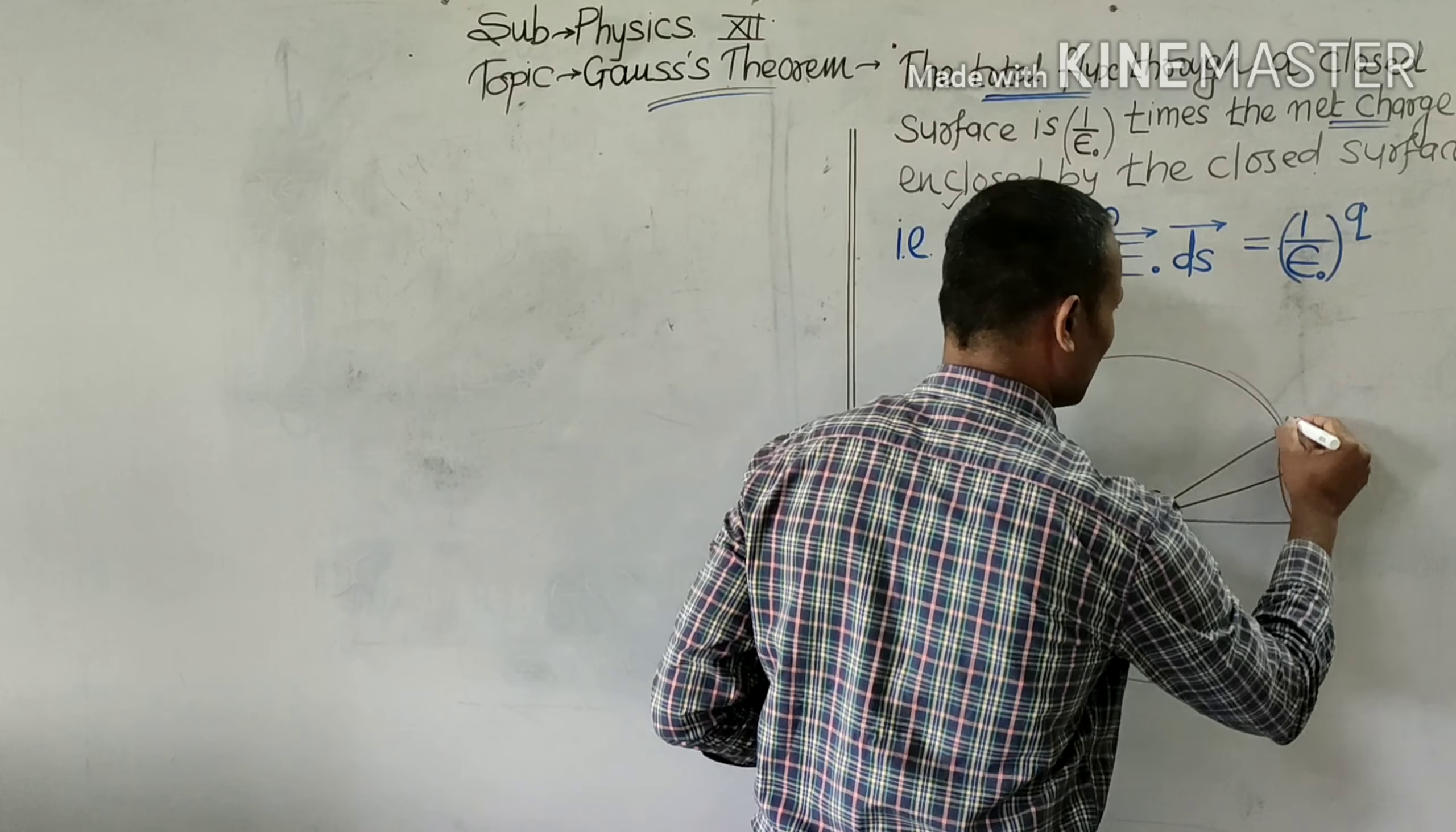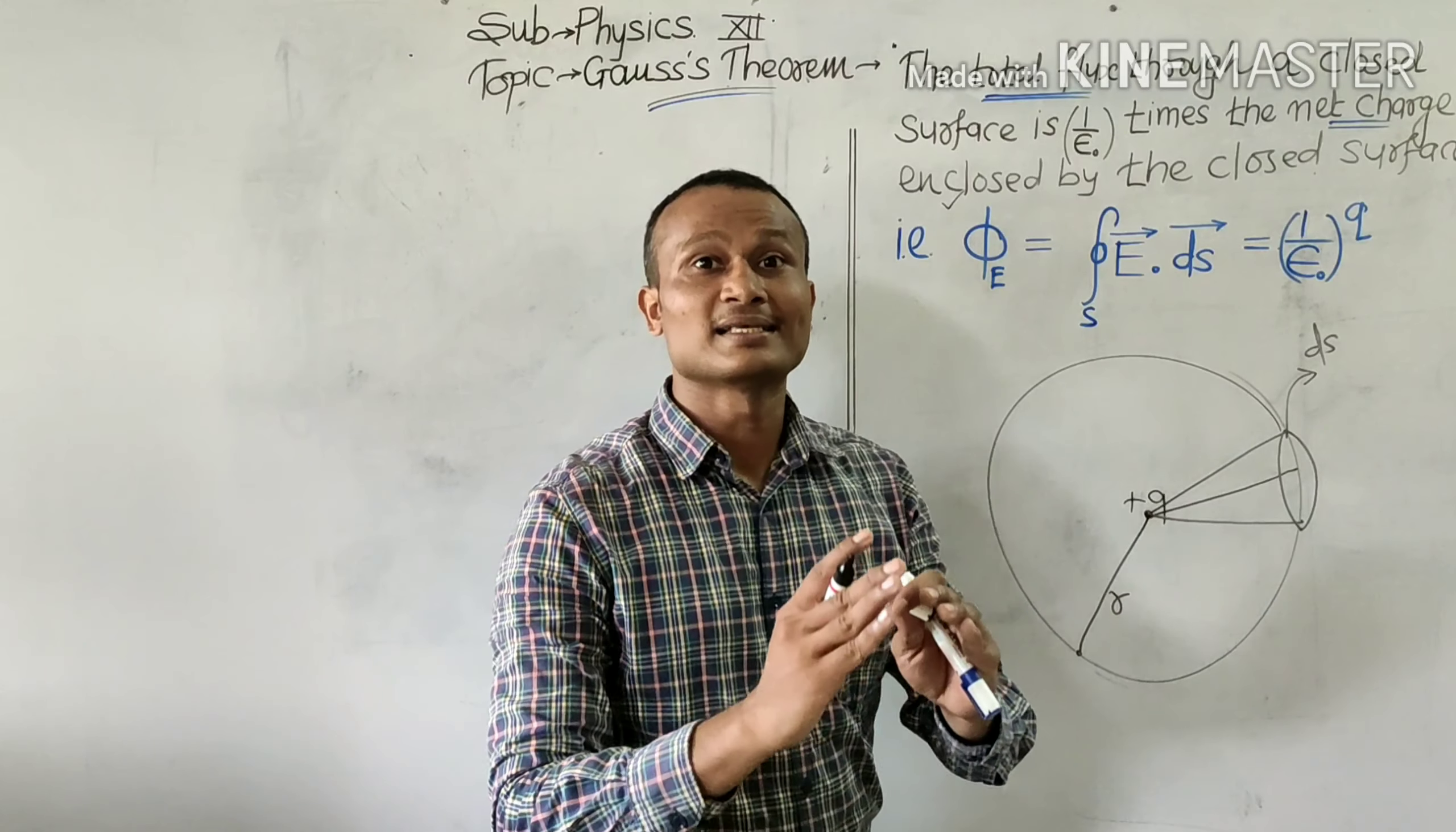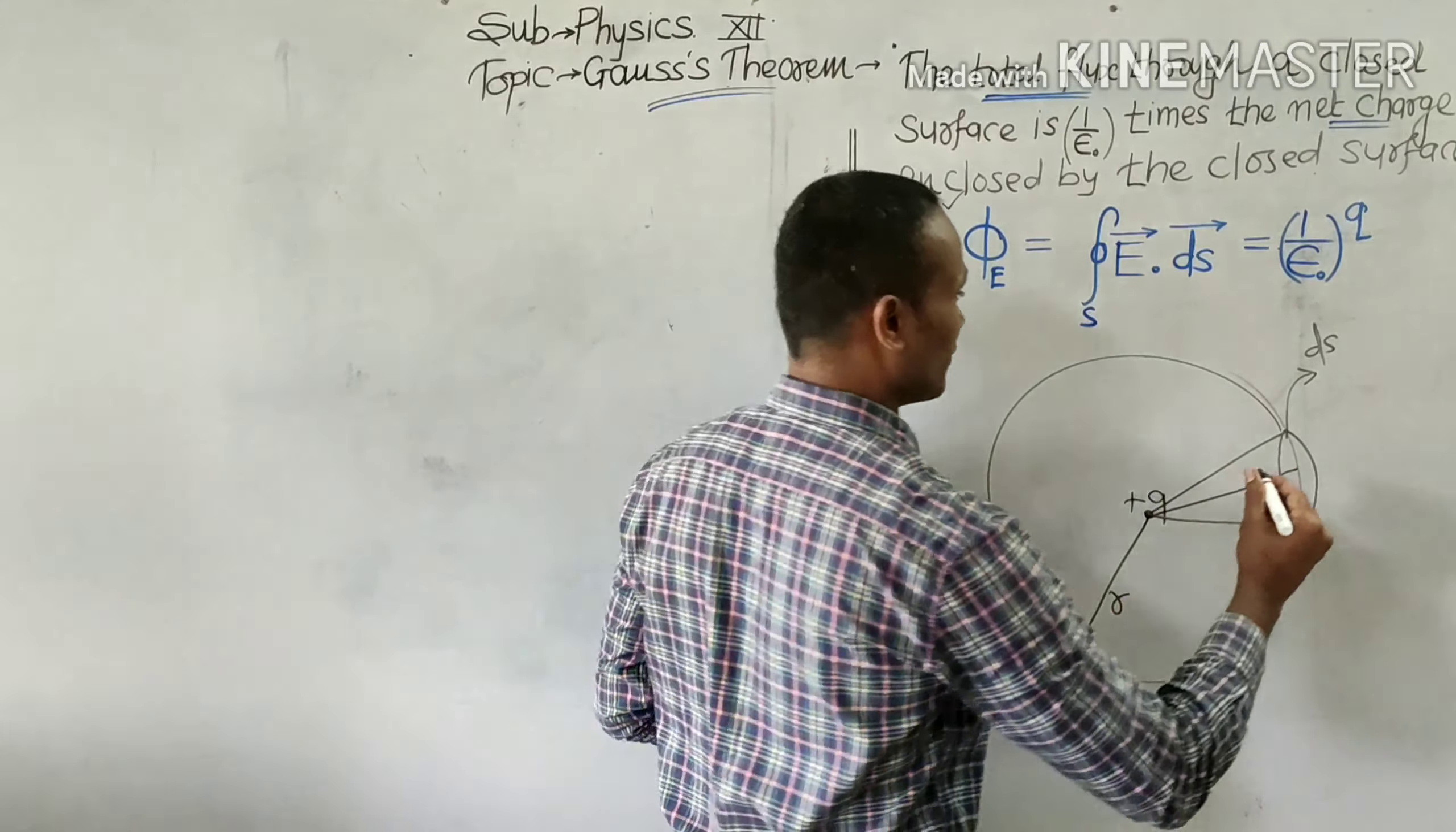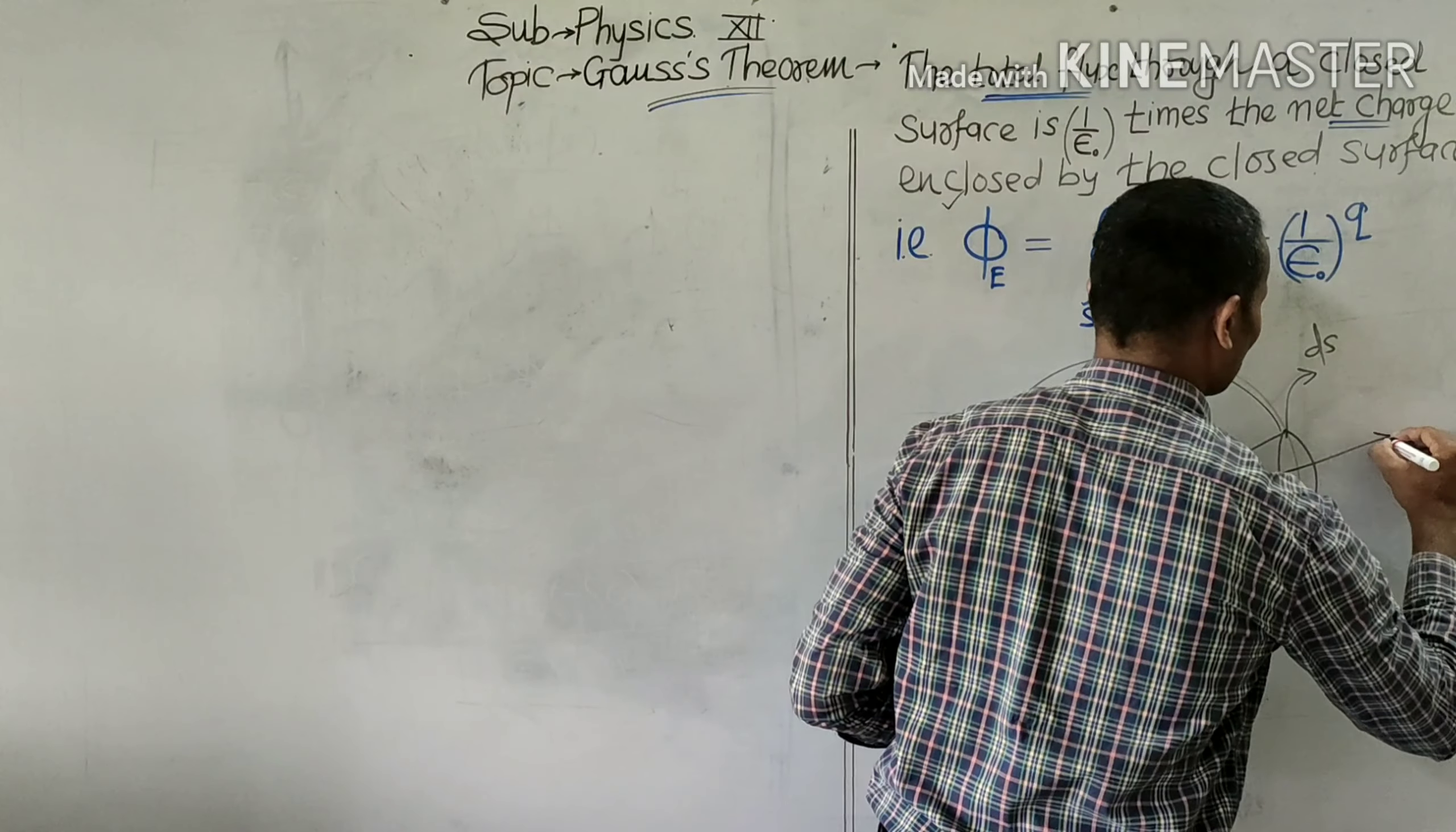Since this is positive charge, it will give out electric field lines in an outward direction. This is how it will give electric field lines. These are the field lines going radially outward.